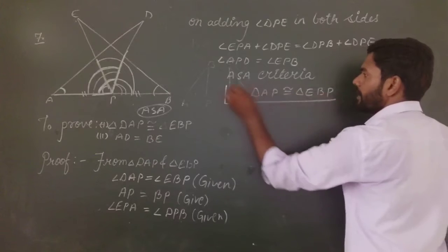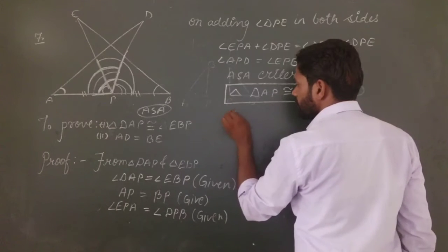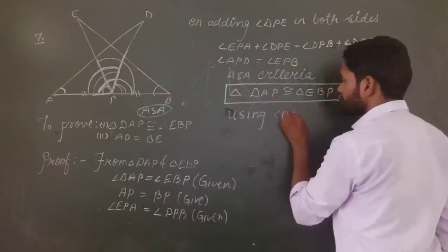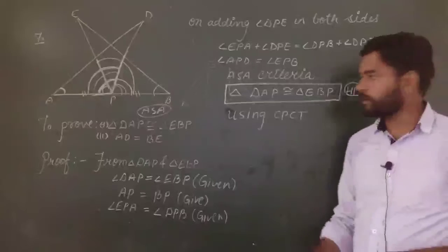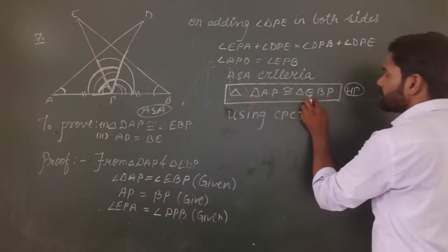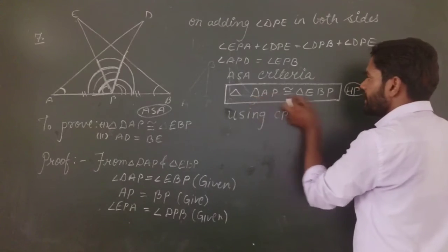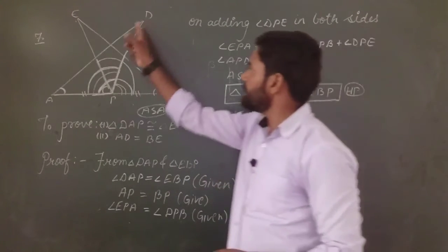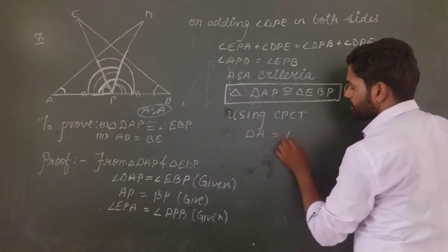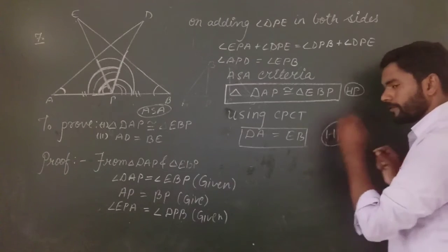So the first part is proved. Now for the second part, using CPCT — corresponding parts of congruent triangles are equal — angle D equals angle E, A equals B, P equals P. Therefore side DA is equal to EB. DA is equal to EB, which is the second part of this question.